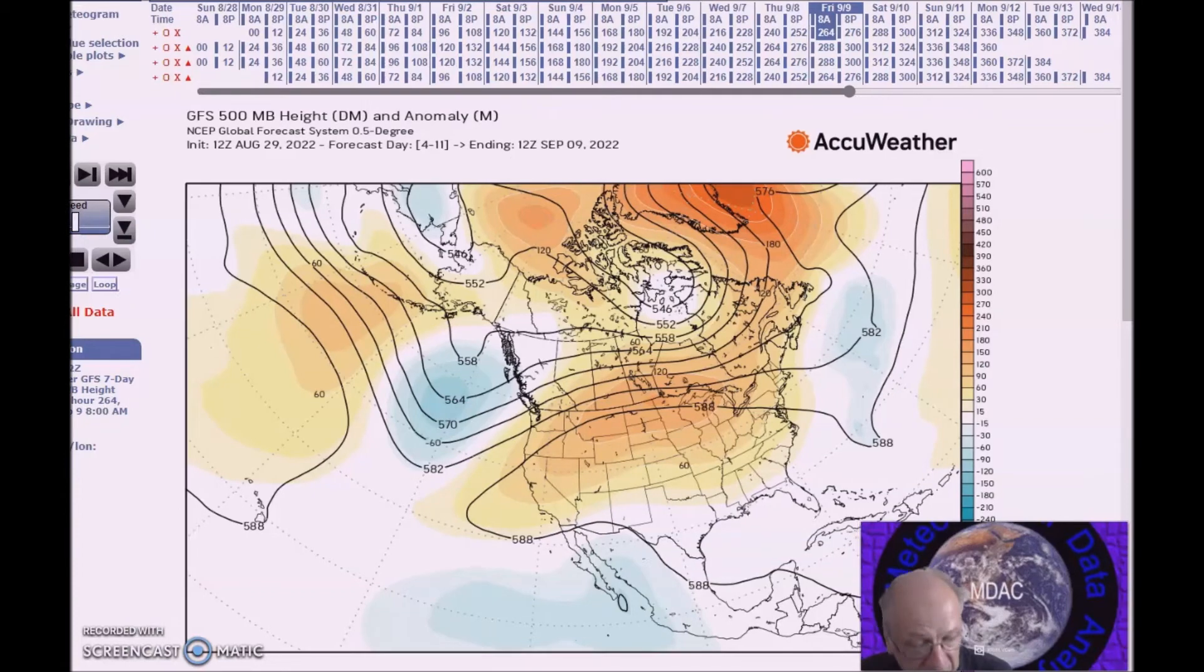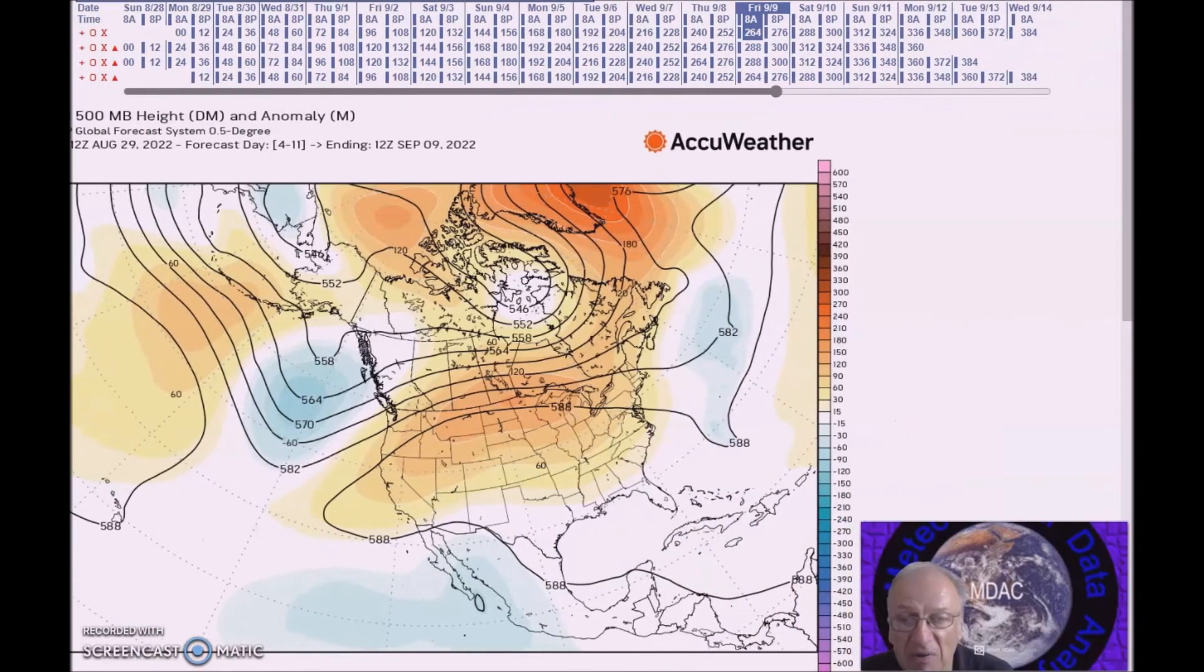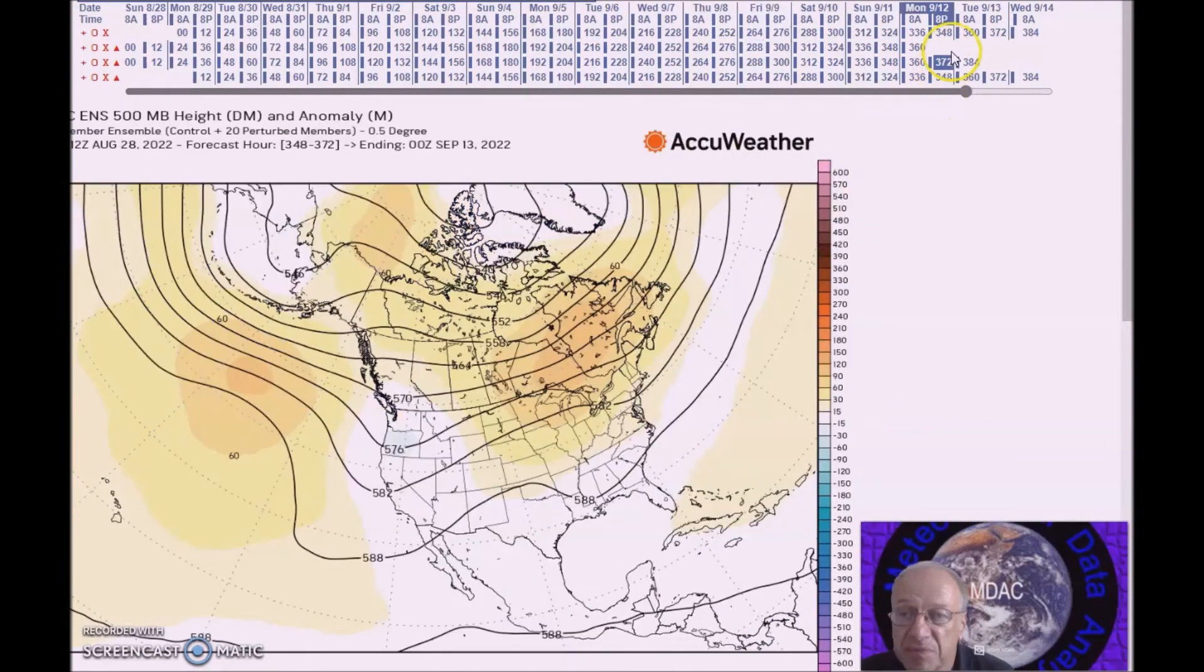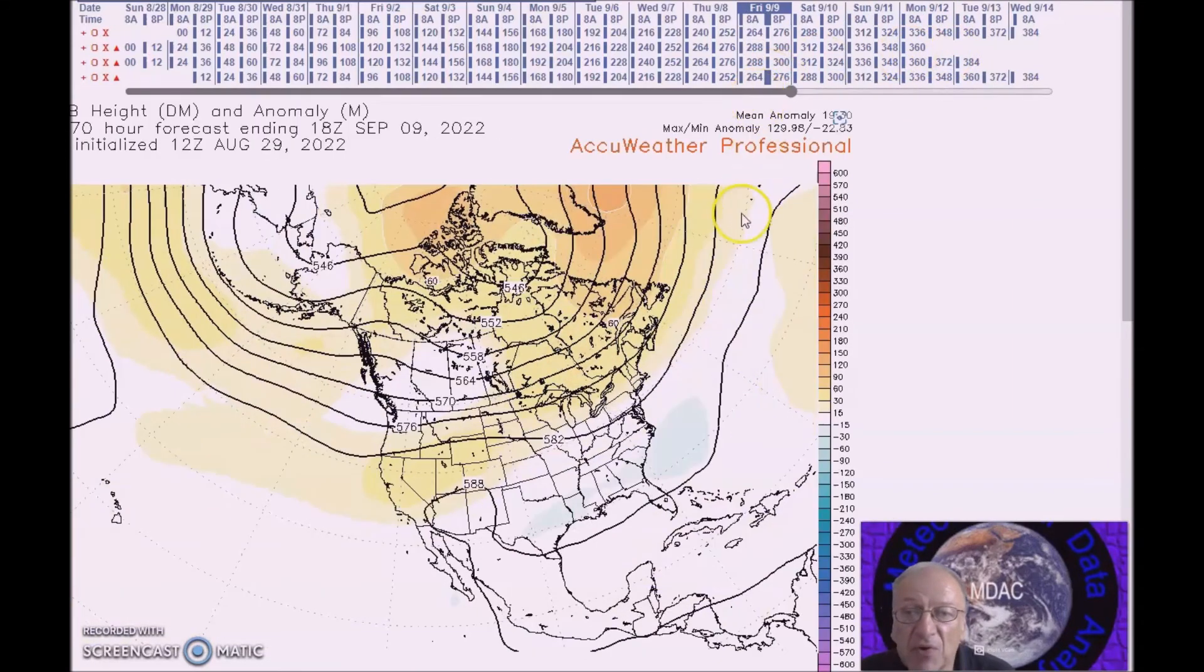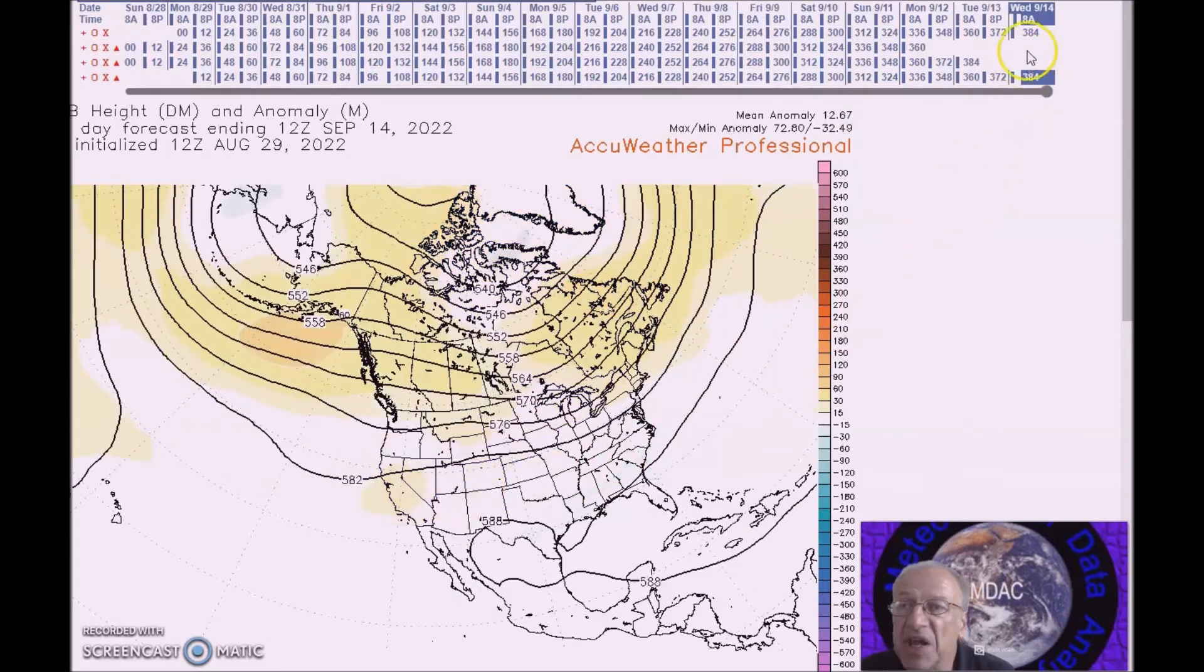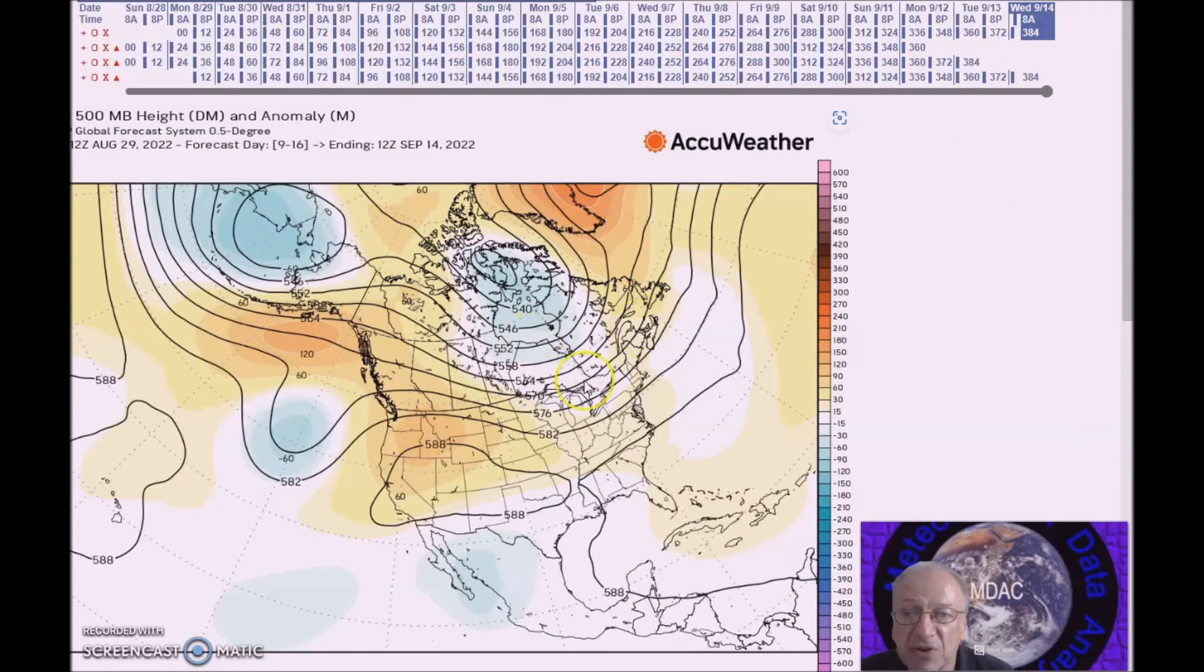Looking ahead for the period for September 11th to the 15th, little change. We have a nearly zonal flow across the northern states with a broad ridge covering southern states. But if you look at the GFS there's a little tendency for a trough here across the northeast, so see how that goes and pushes the ridge more to the west.